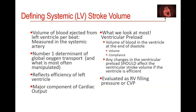Stroke volume is the amount of volume ejected by the LV per beat, in the systemic artery. Normally it is 60 to 100 mL. If I'm hypovolemic, my stroke volume is down. If I have cardiogenic shock, my stroke volume is down. If I have anaphylaxis or sepsis with a healthy heart, my stroke volume will be up.